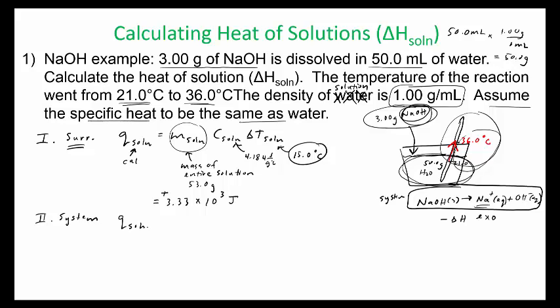So you take the heat of solution equals the negative heat of the reaction. So we change the sign, negative 3.33 times 10 to the 3rd joules.